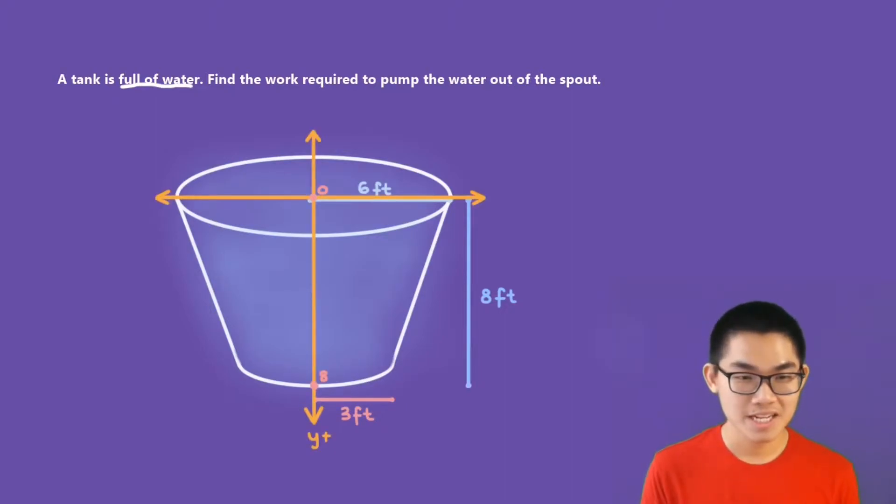The first step is to put the x and y axis looking like this, where this direction is the positive direction for the y axis. So we know that our tank is 8 feet tall, because the height is 8 feet. So that's why this point is 0, and this point will be positive 8. We also know that the radius of the top circle is 6 feet, so the distance from here to here is 6 feet, and the distance from here to here is 3 feet.